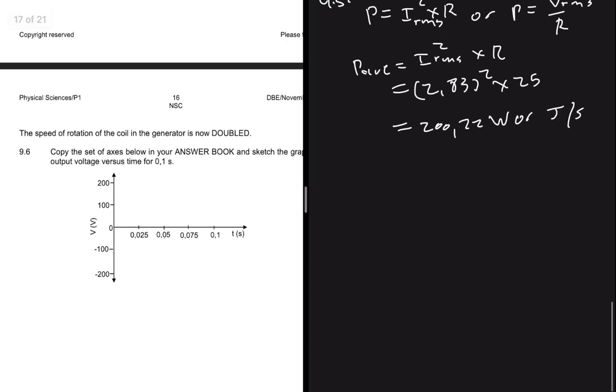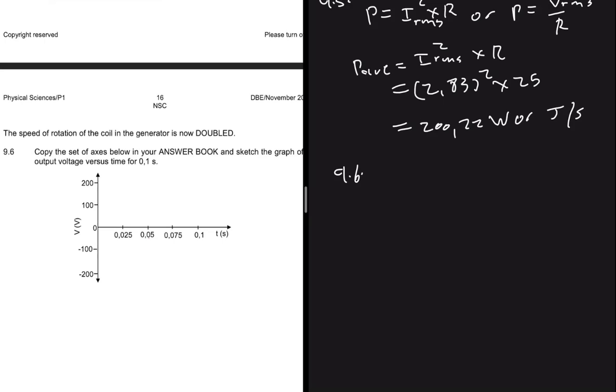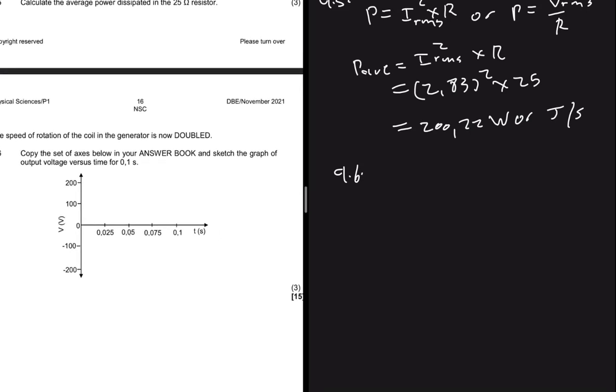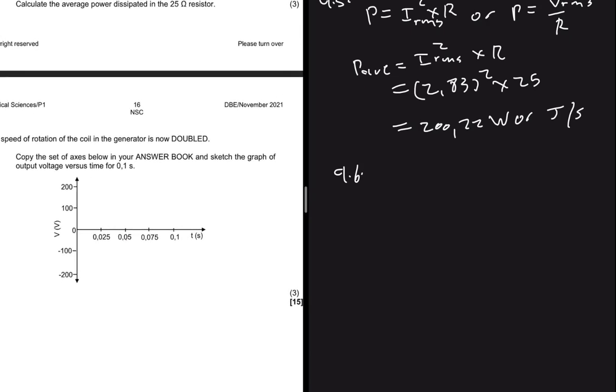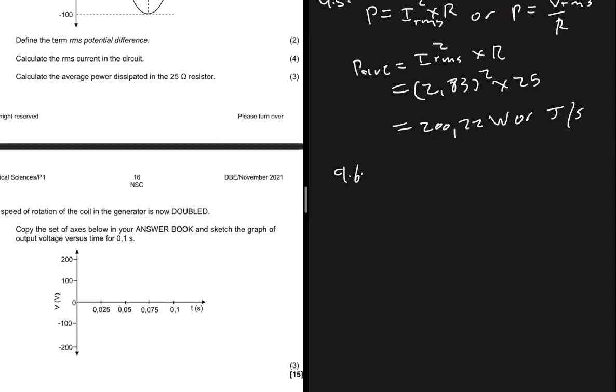Question 9.6 says the speed of rotation of the coil in the generator is now doubled. Copy the set of axes below in your answer book and sketch the graph of output voltage versus time for 0.1 seconds. We know that f is equals to the speed multiplied by the wavelength. Let's see what happens if the speed is doubled. If you double the speed of rotation you get f equals to 2 multiplied by the speed divided by wavelength. So basically you multiply the frequency by 2. When you multiply the frequency by 2, we know that f is equals to 1 divided by the period, so when you multiply the frequency by 2 you're basically reducing the period by half.